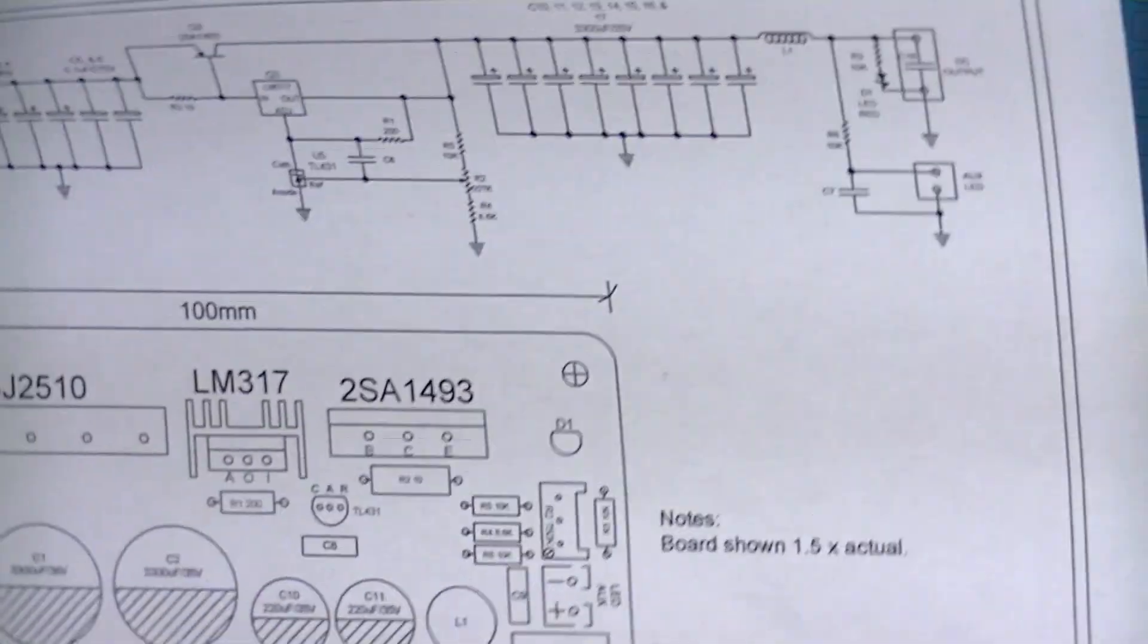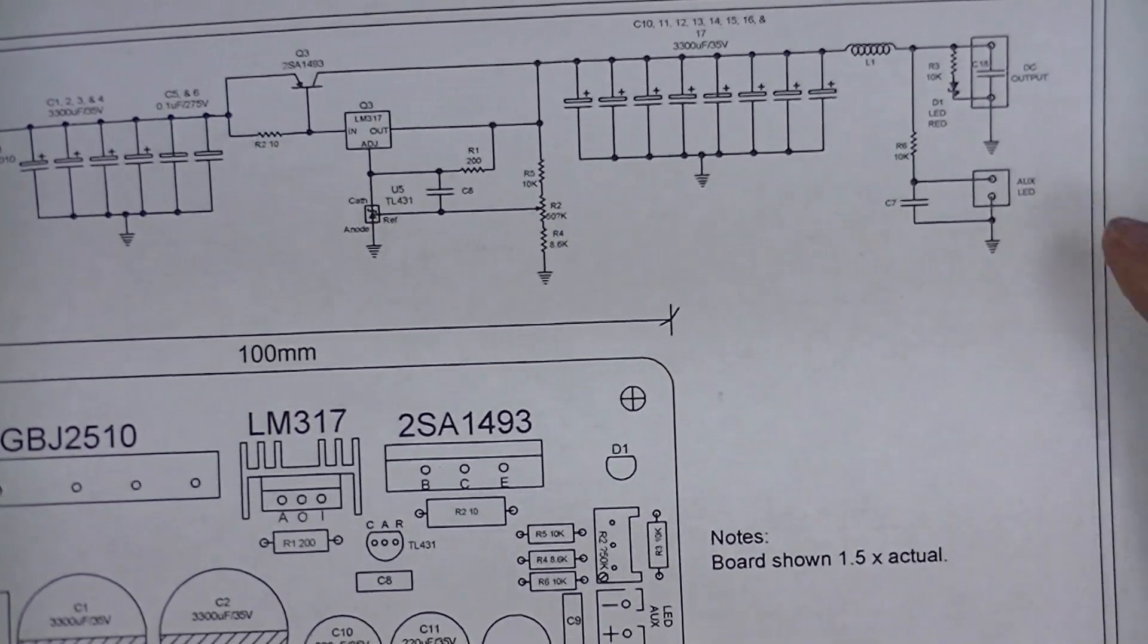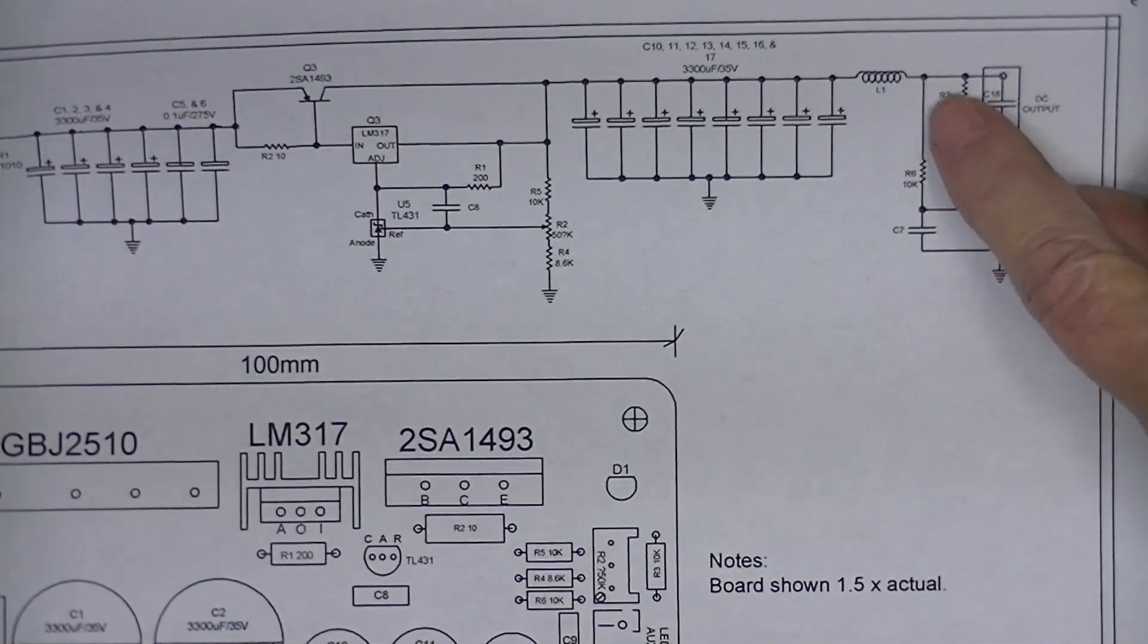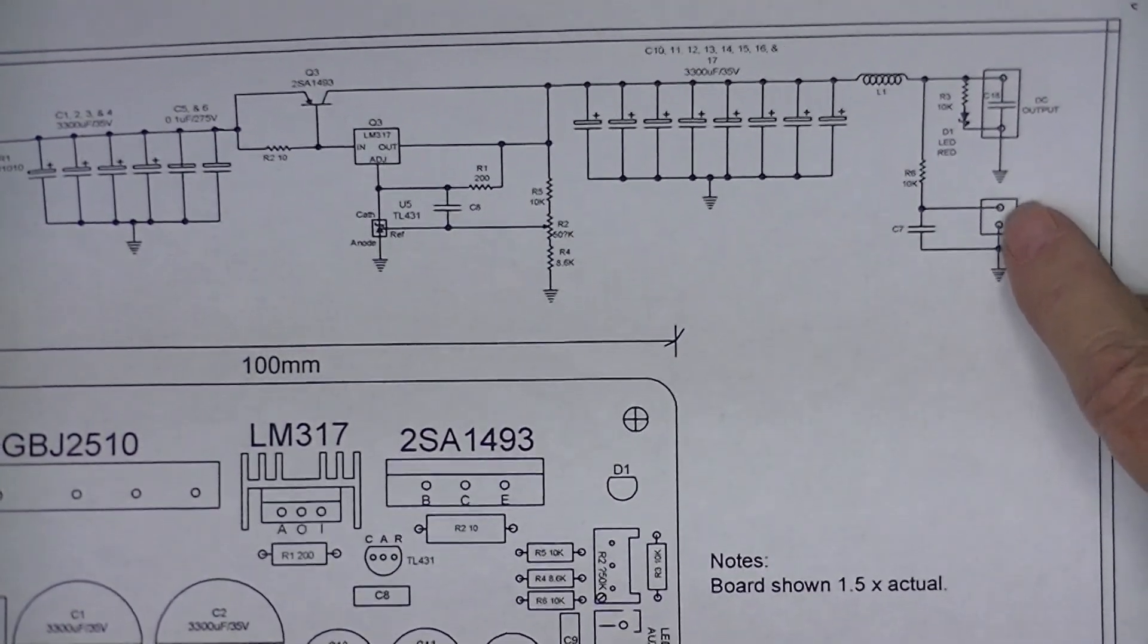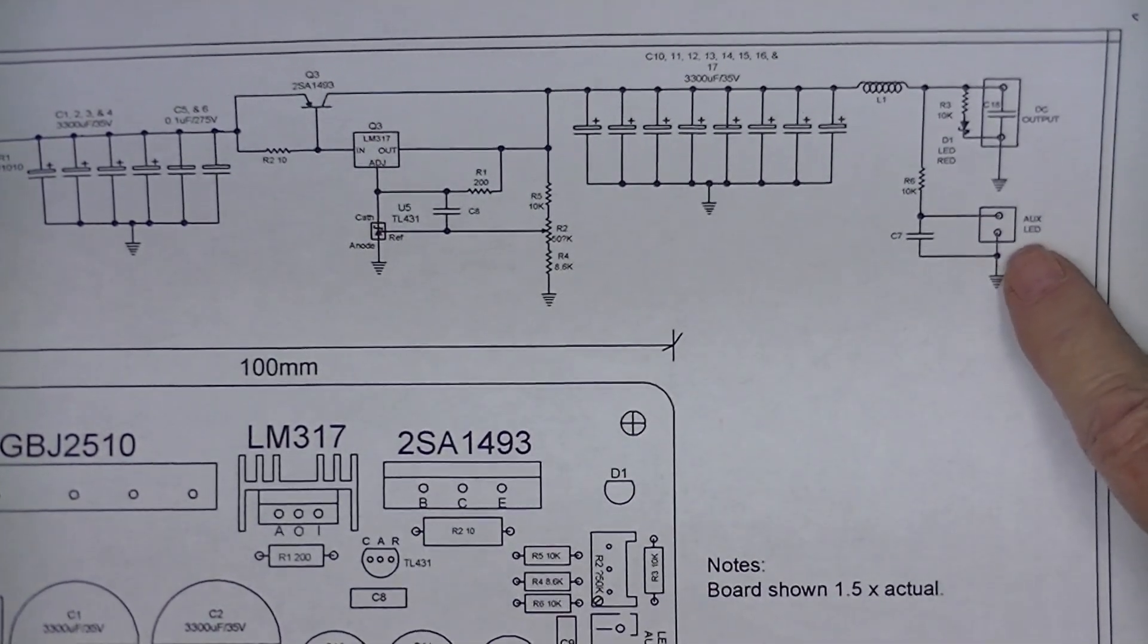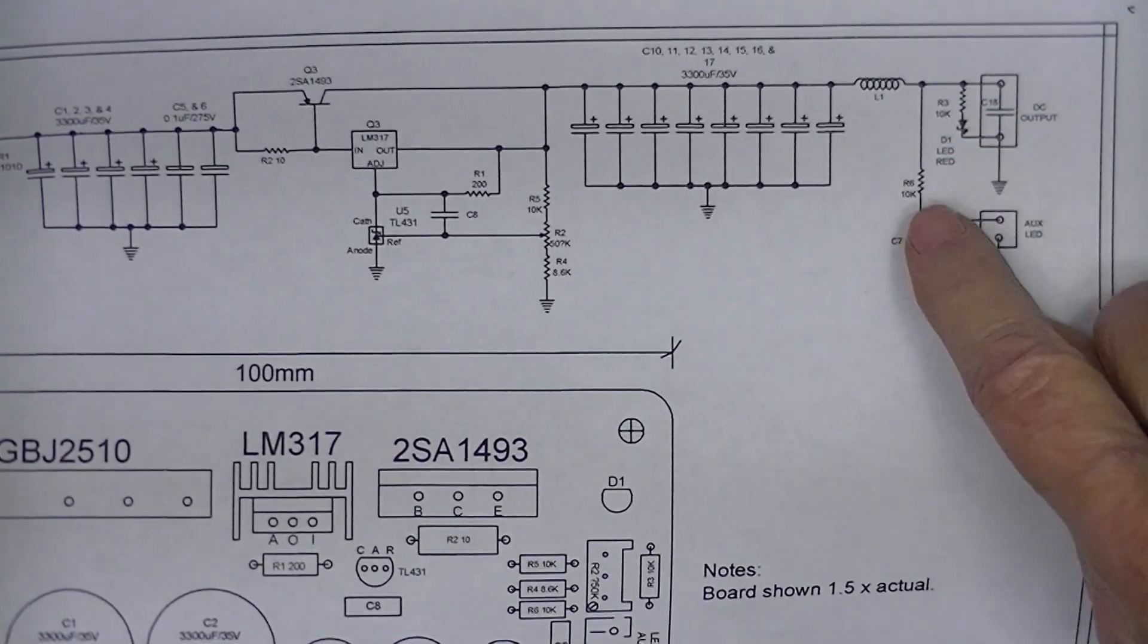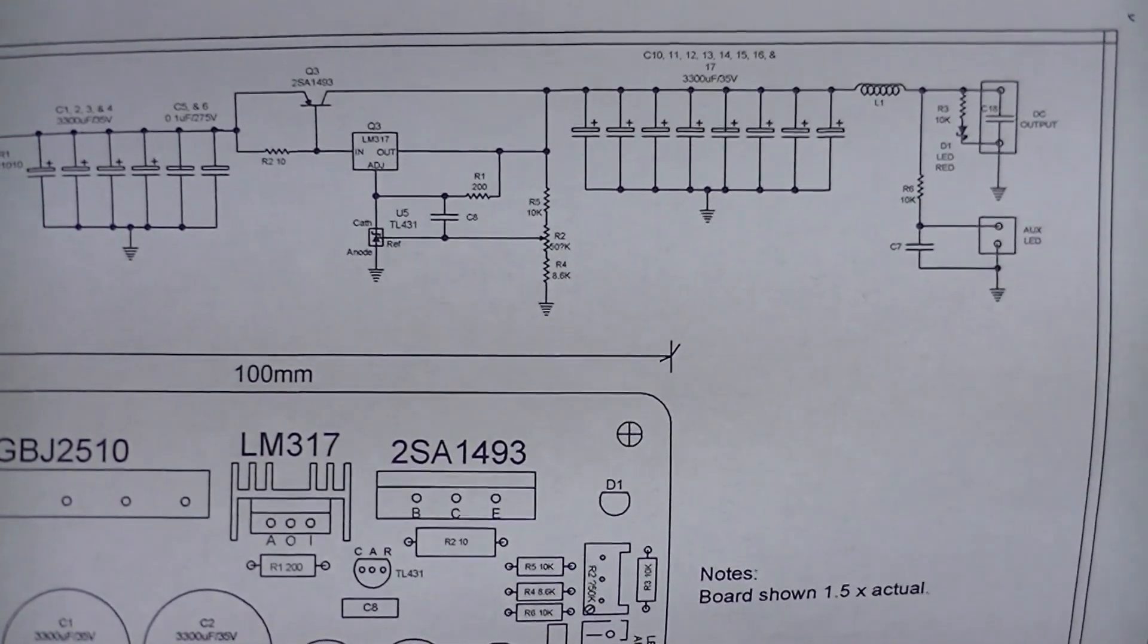This other jack is not output voltage, it has a 10k current limiting resistor because I believe this is a connection for an external LED. The LED here and the LED here would both be connected to the output, both have a 10k current limiting resistor, so I believe what we have is a remote LED if necessary.